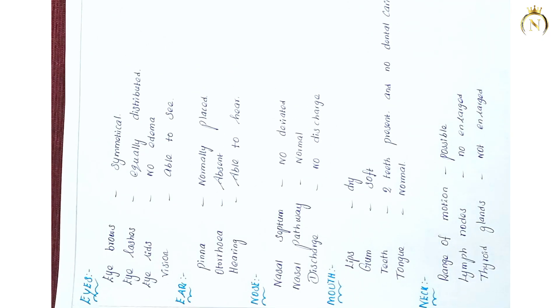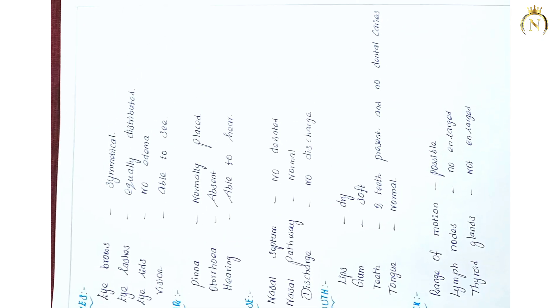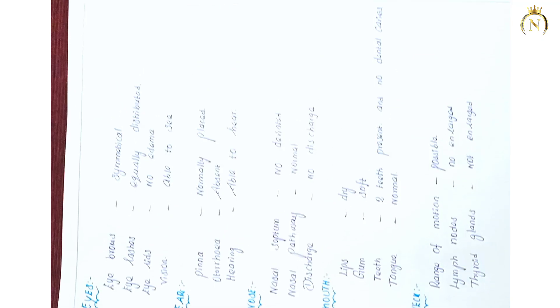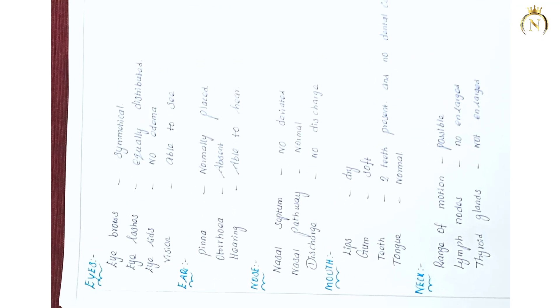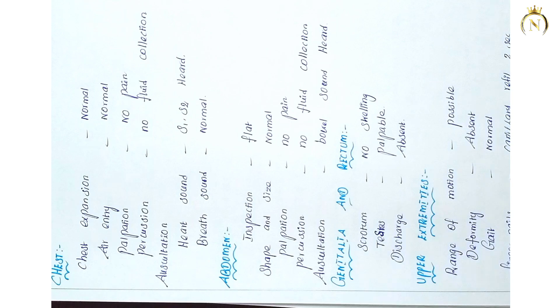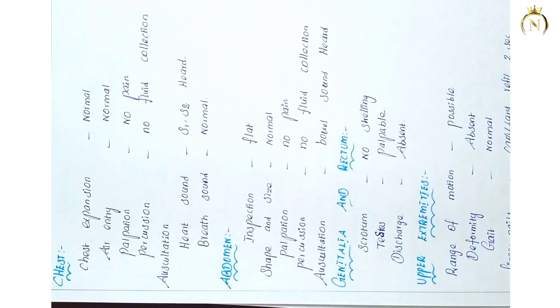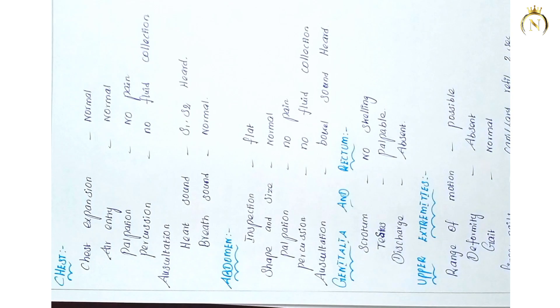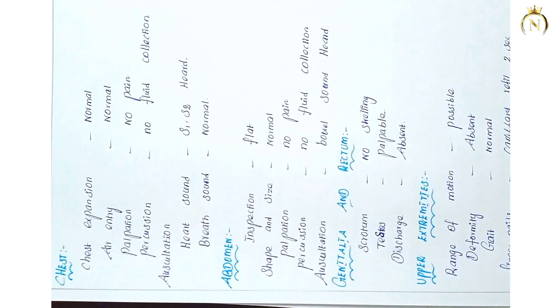After immunization history, you have to mention the physical examination. You have to examine the infant and examine each part. If any abnormalities are present, you can mention them for each part.